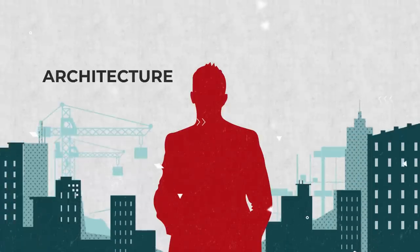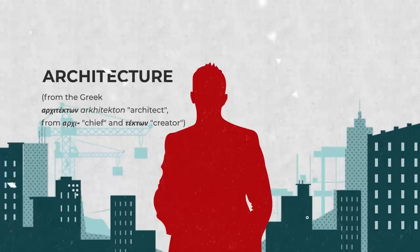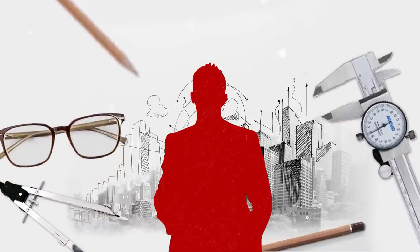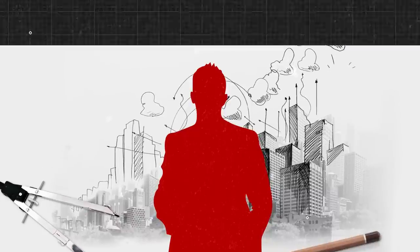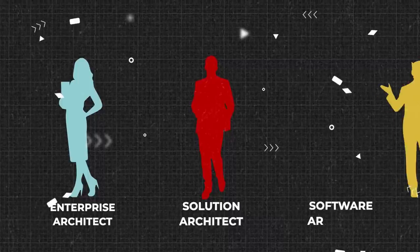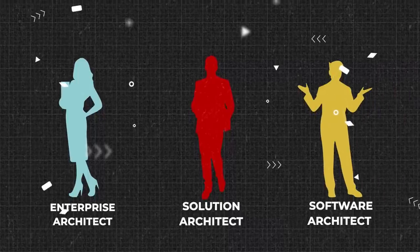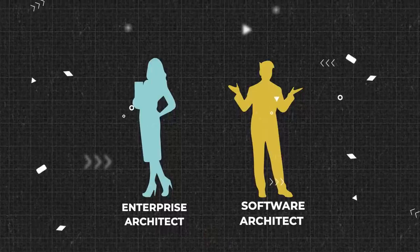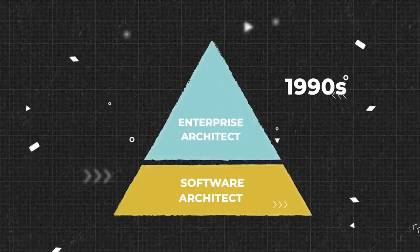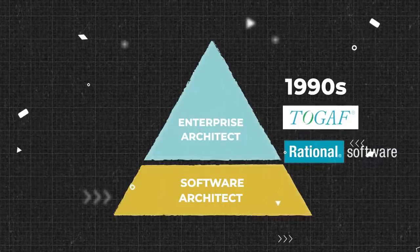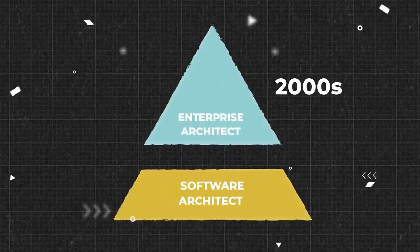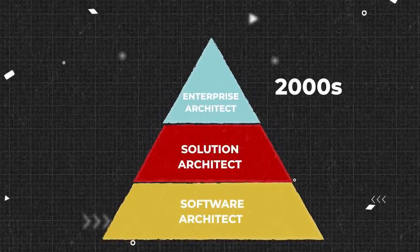The term architecture was borrowed from the construction industry to highlight the complexity of problems — these were enterprise systems after all. The term also depicts a vantage point: architects oversee the big picture without diving into low-level technical details. Today, we know three main roles related to architecture: enterprise, solution, and software architects. First, there were enterprise architects and software architects. Solution architects weren't initially recognized either in enterprise architecture frameworks like TOGAF or in software development ones like Rational. But sometime in the mid-2000s, the role emerged as a middle ground between a wide enterprise perspective and a narrow tech perspective.